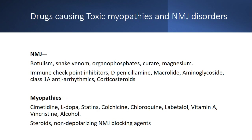Drugs causing toxin myopathy and neuromuscular junction disorders include botulism, snake venom, organophosphorus, and curare. Importantly, magnesium — which we use very frequently — is a big contraindication in suspected myasthenia gravis, as it can precipitate myasthenic crisis. Immune checkpoint inhibitors are commonly used and can induce myasthenia gravis, often presenting as seronegative. Withdrawing the drug leads to improvement; repetitive nerve stimulation can help differentiate the cause.